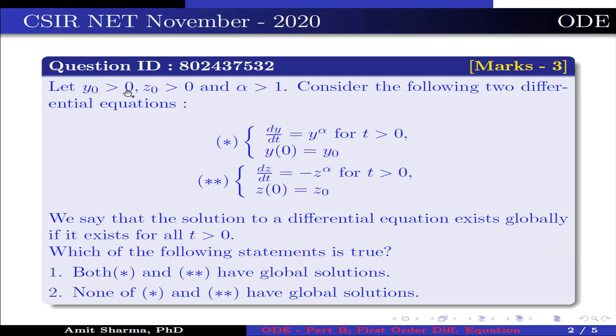Question is: let y₀ > 0, z₀ > 0 and α = 1. Consider the following two differential equations: dy/dt = y^α for t > 0, y(0) = y₀, this is represented by (*).